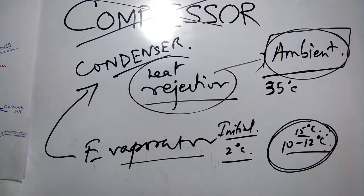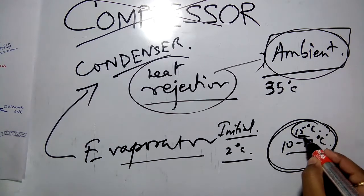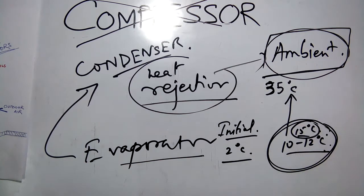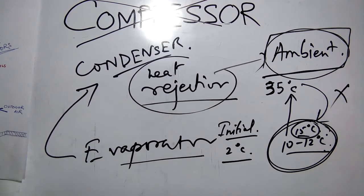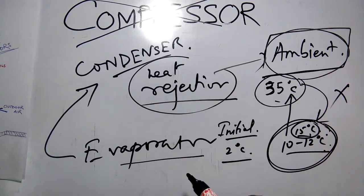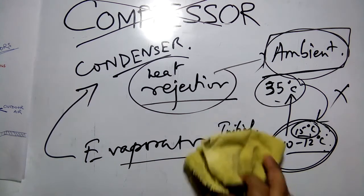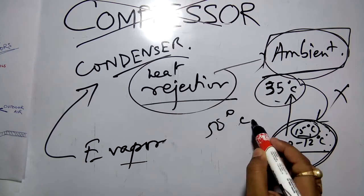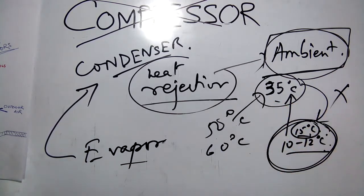Here is why the compressor is essential. When the refrigerant leaves the evaporator, its temperature is about 15°C (it has absorbed heat from the warm room air and vaporized). The ambient temperature outside in summer is about 35°C. For heat rejection to occur in the condenser, the refrigerant must be hotter than the ambient — heat cannot flow from a lower temperature to a higher temperature. If we send the 15°C refrigerant directly to the condenser, the ambient at 35°C would actually give heat to the refrigerant, which is the opposite of what we want.